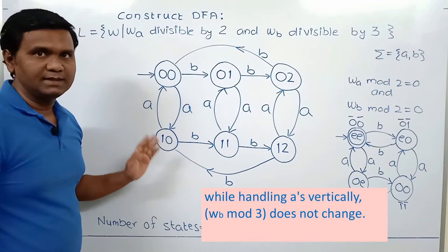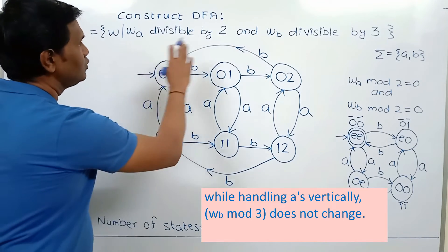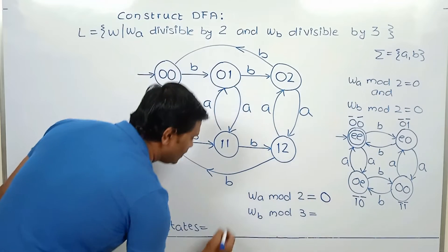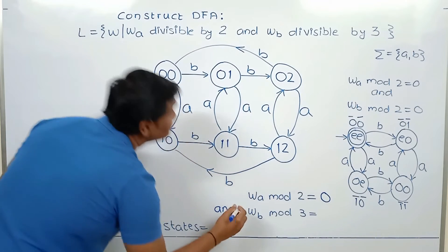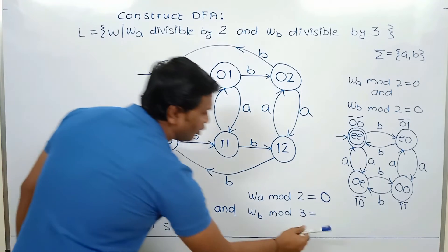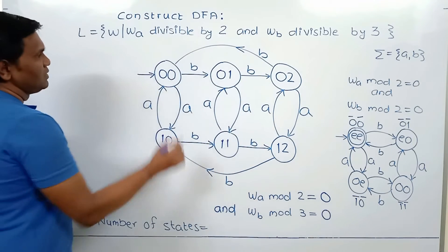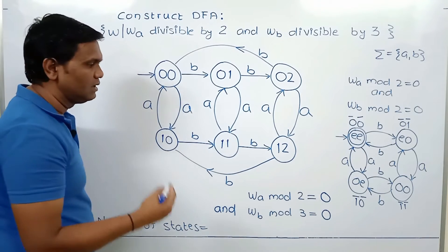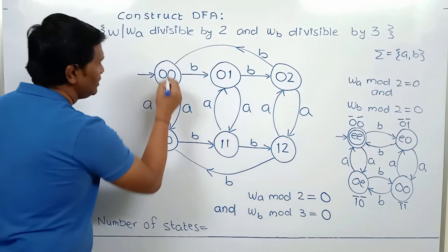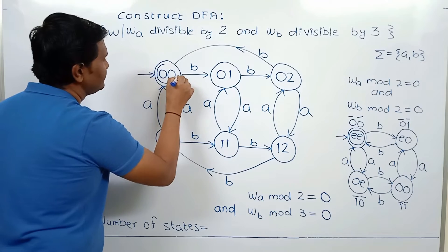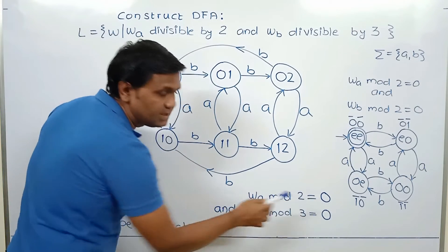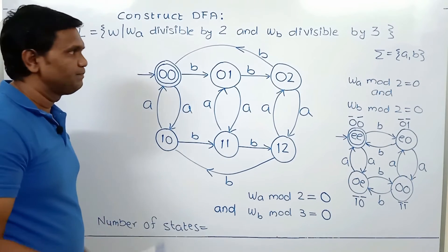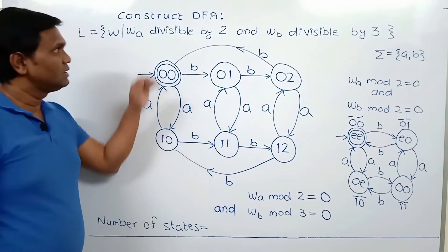Now we mark the final states according to the problem statement. The condition requires number of A mod 2 = 0 AND number of B mod 3 = 0. The first number is for number of A mod 2 and the second is for number of B mod 3. We require state (0, 0). Since there is an AND condition, both conditions must be satisfied simultaneously, so we mark only state (0, 0) as the final state. This is the required DFA for this problem statement.